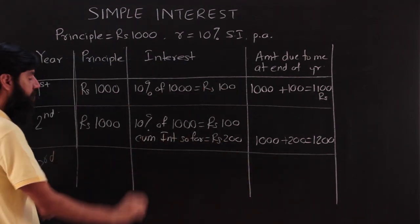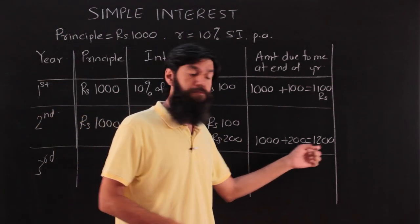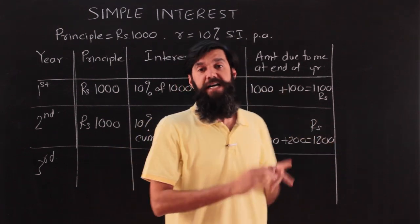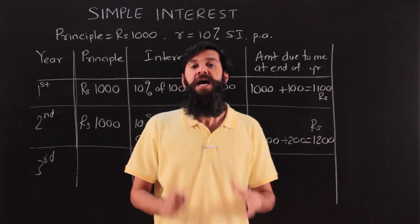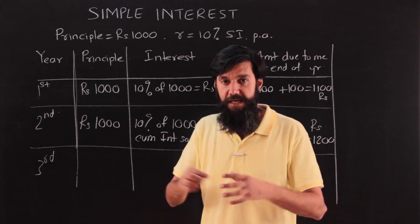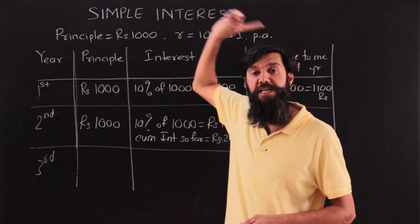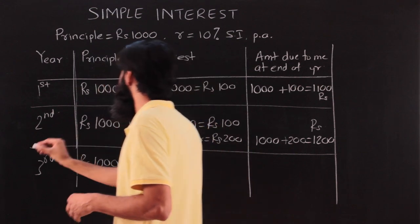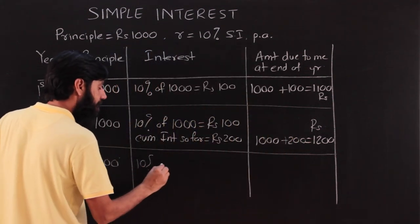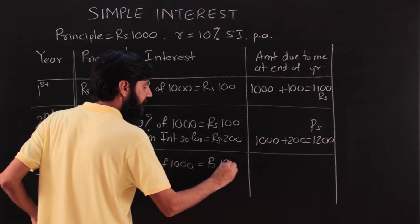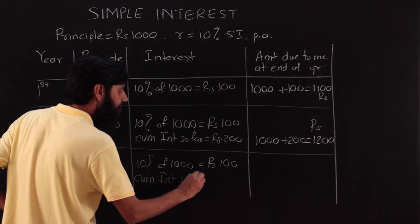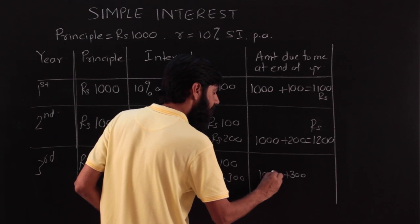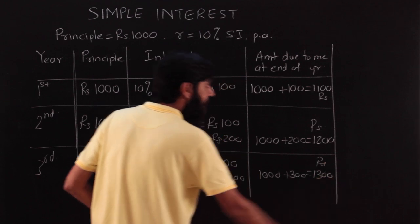For the third year, even though the amount due to me is rupees 1200, the bank is going to calculate interest on only what I had kept originally — 1000. That is the meaning of simple interest. So the interest is again 10 percent of 1000, which is rupees 100. Cumulative interest for three years is 300, and the amount due to me is rupees 1300.